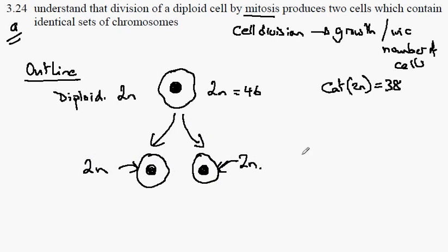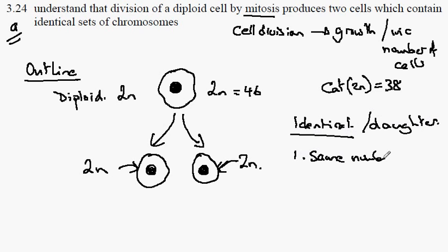We often say that these cells are identical, sometimes described as daughter cells. They are identical in two respects. One, they have the same number of chromosomes. And the second point is that they have the same set of chromosomes.